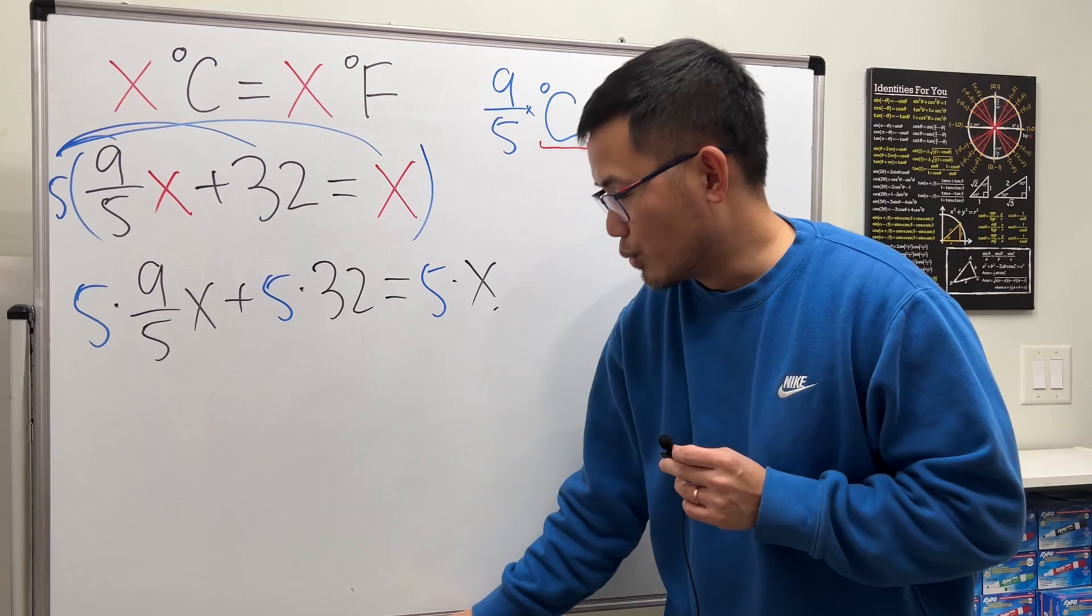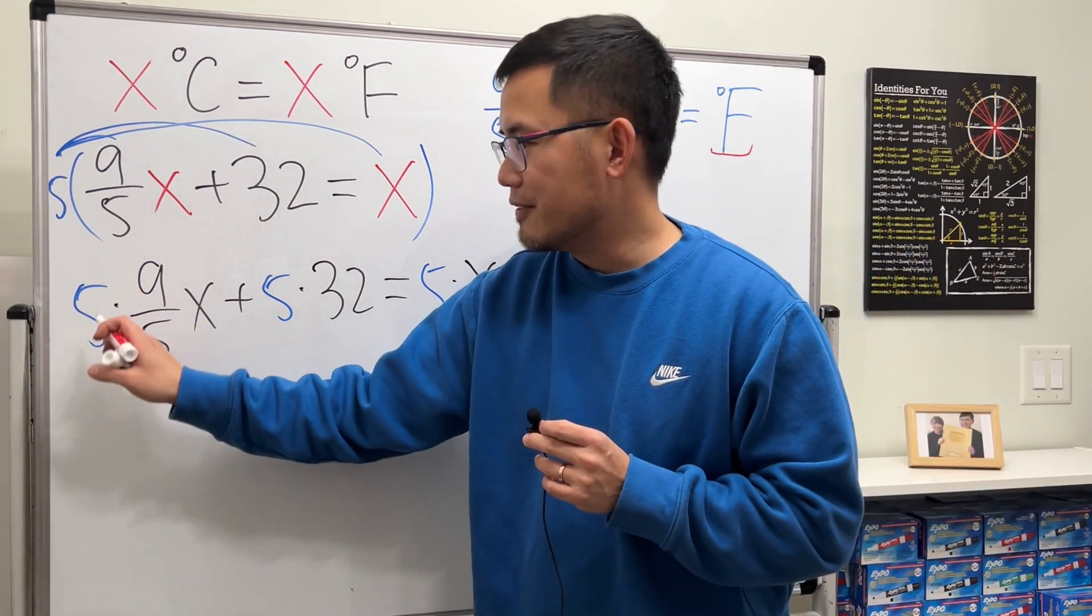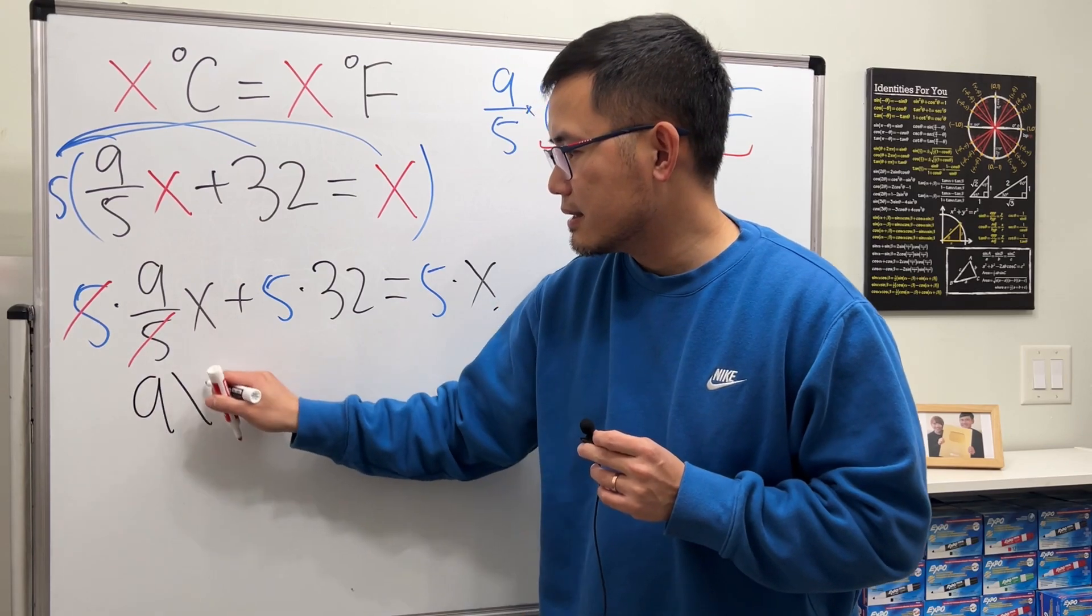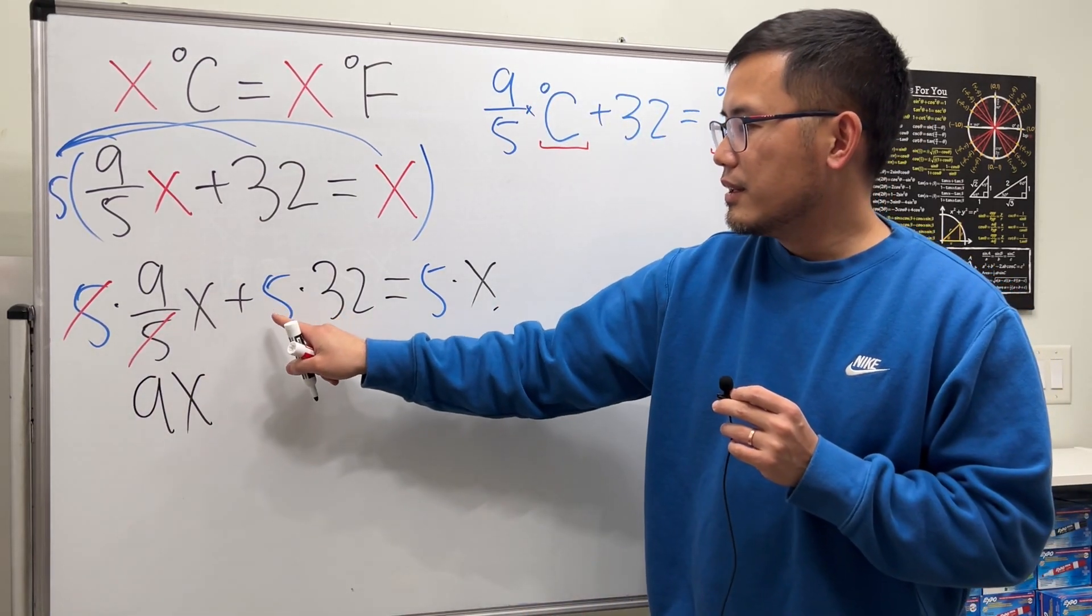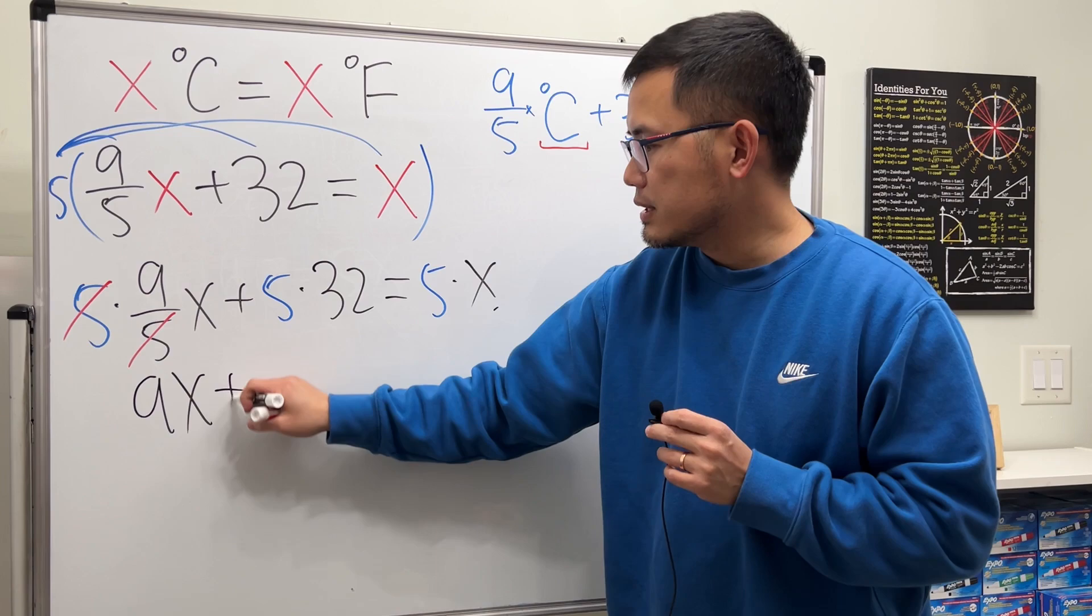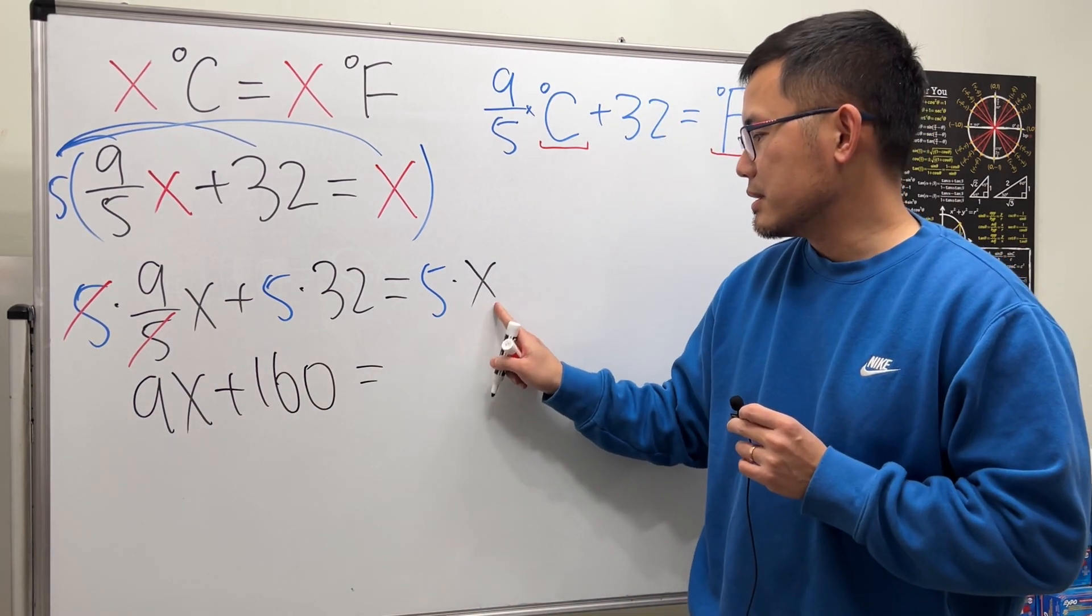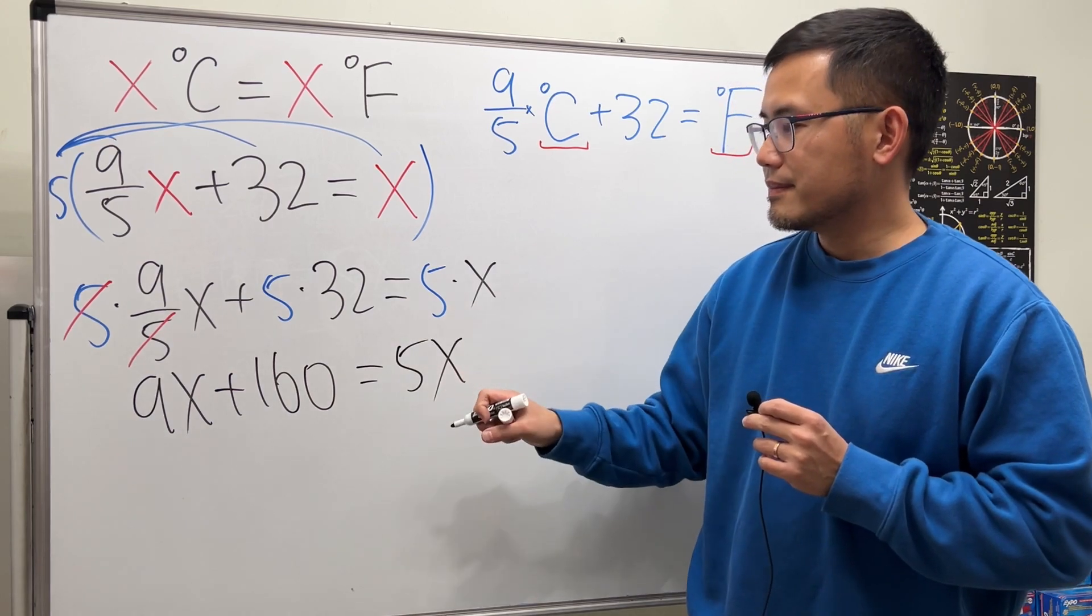You see the 5 and 5 cancel? So this right here is just 9x. Next, 5 times 32 is 160, and 5x right here, 5 times x, just 5x.